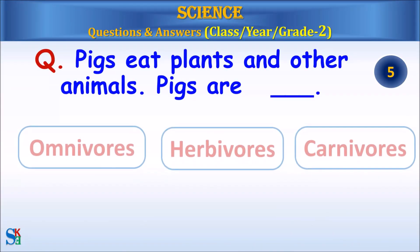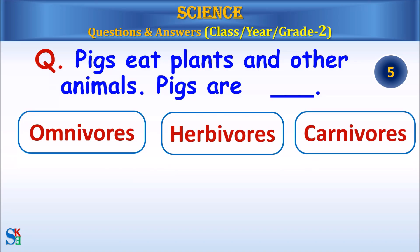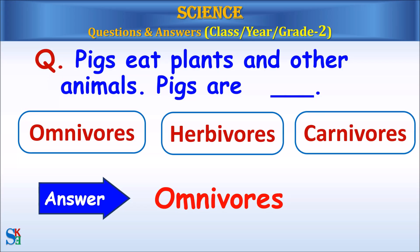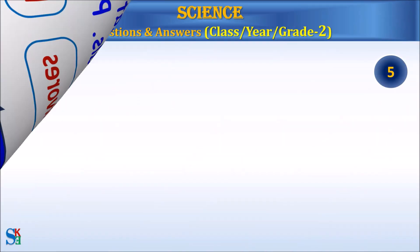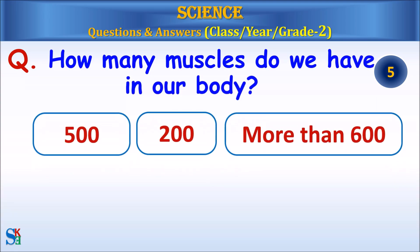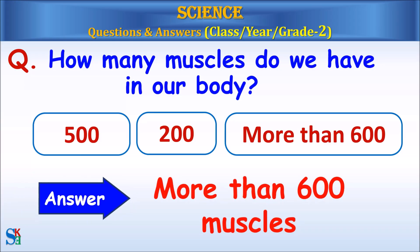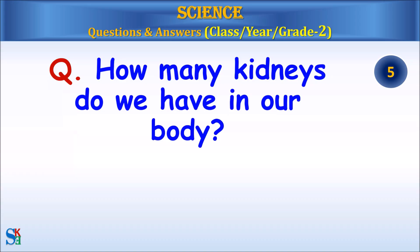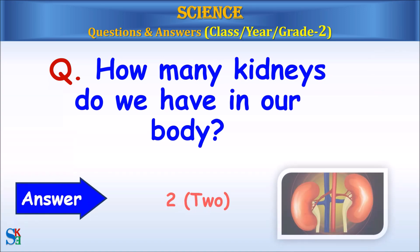Pigs eat plants and other animals. Pigs are omnivores, herbivores or carnivores. Answer, omnivores. How many muscles do we have in our body? Five hundred, two hundred or more than six hundred? Answer, more than six hundred muscles. How many kidneys do we have in our body? Answer, two.